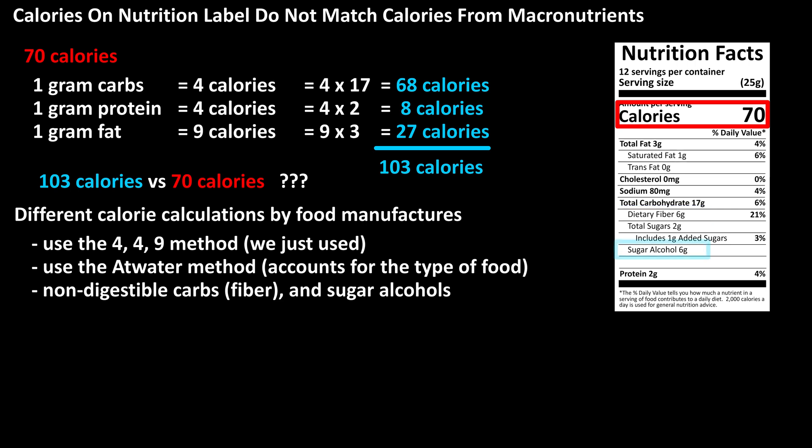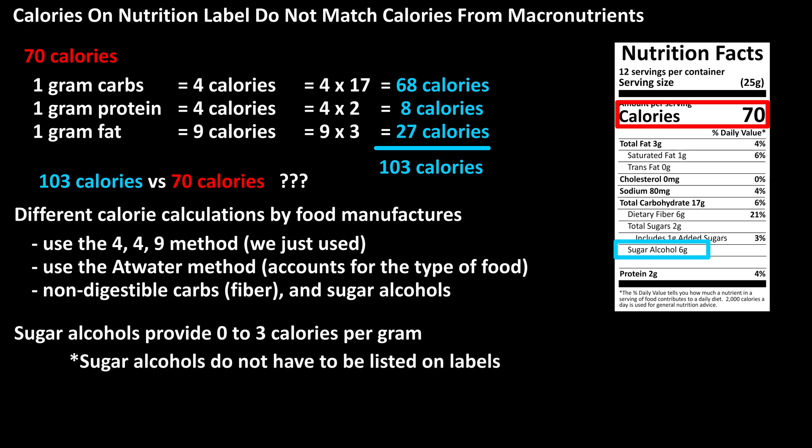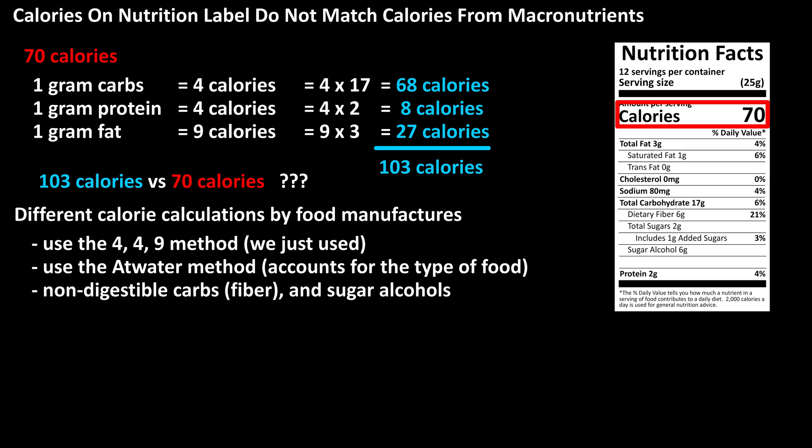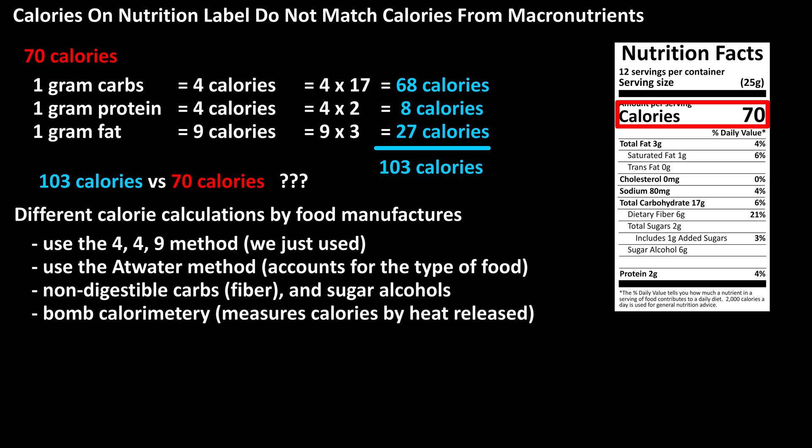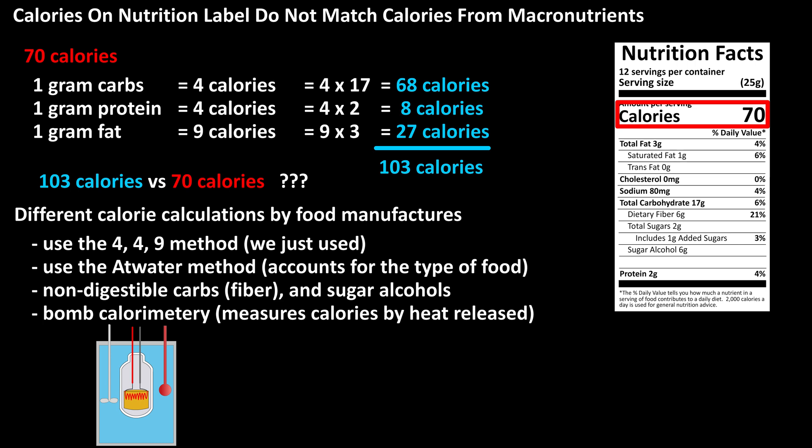Now for sugar alcohols. Sugar alcohols are a type of carbohydrate that contain a smaller amount of calories per gram, depending on the type of sugar alcohol. One note: sugar alcohols are not required to be listed on food labels, unless a statement is made on the packaging label about the health effects of sugar alcohols or sugar. Another method used to calculate calories is bomb calorimetry. This process involves burning food items and measuring how much heat it releases, and converting that to calories.